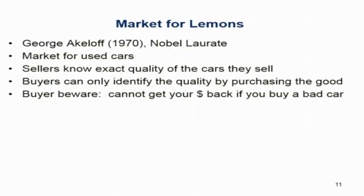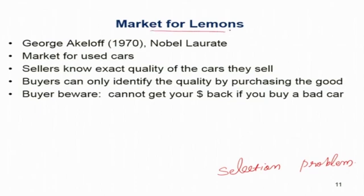One kind of information asymmetry problem is called adverse selection. This issue was first thoroughly discussed by George Akerlof, a Nobel laureate, in his famous work on the market for lemons. Using the example of the used car market, he explained how information asymmetry leads to selection bias and how eventually the used car market collapses — that is, market failure occurs.